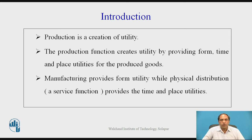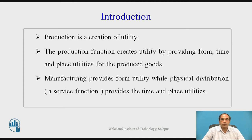For example, iron ore is there. When I convert iron ore into pig iron, I am performing a conversion process — a production process converting iron ore into pig iron. Now pig iron has utility. When I produce castings from pig iron, I am performing another manufacturing process called the foundry process, converting pig iron into various castings. Casting has utility. When I take a casting and perform machining, machining adds another value, giving further improvement.